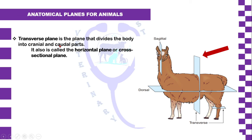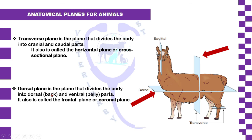The transverse plane divides the body into a cranial part and a caudal part. It is also called the horizontal plane or cross-sectional plane. The dorsal plane divides the animal into dorsal and ventral parts, and it is also called the frontal or coronal plane.